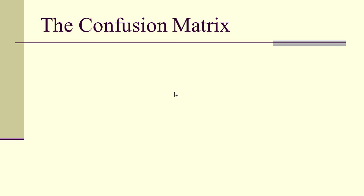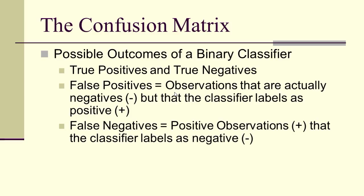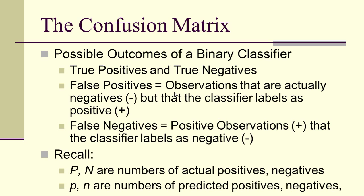Let's look at the confusion matrix. The possible outcomes of a binary classifier are: true positives, true negatives, false positives, and false negatives. Capital P and capital N are the actual numbers of positives and negatives respectively, while lowercase p and lowercase n are the numbers of predicted positives and negatives respectively.